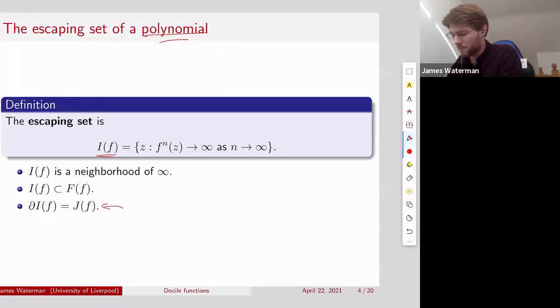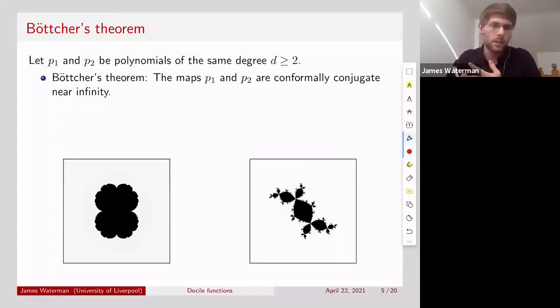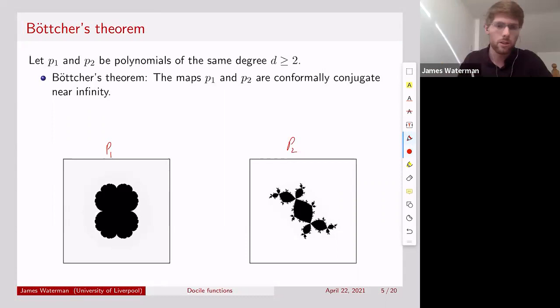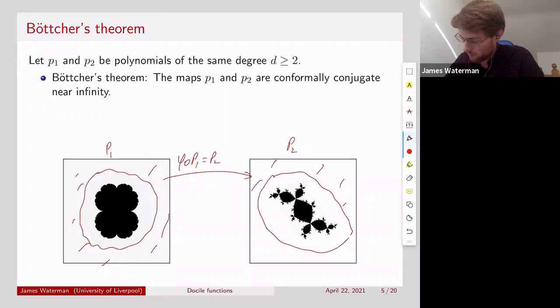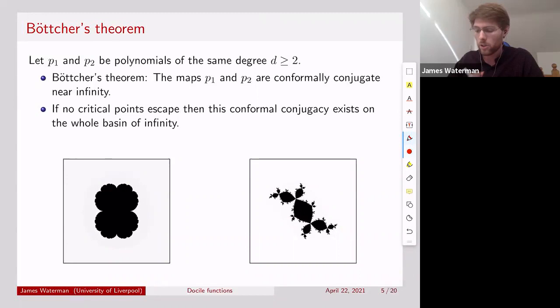If we have two polynomials P1 and P2, we have two pictures for them where white is the escaping set and black is the points that don't escape. Böttcher's theorem tells us that our maps P1 and P2 are going to be conformally conjugate near infinity. So we have a nice conformal conjugacy near infinity. In fact, if we also have that we don't have any critical points escaping, then this conformal conjugacy actually exists on the entire basin of infinity, that is all of I of P1 or P2.